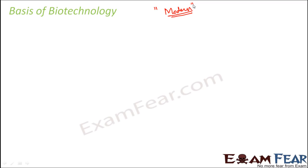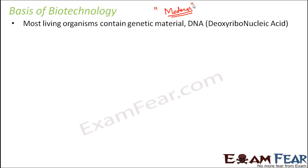Now the question is: what is the basis of this mix and match? How can we even think of mixing and matching genes between organisms? A lion looks so different from a mouse, a mouse from a bird, and a bird from a human being. So how can we even think of exchanging genes between them? That's because all living organisms contain a genetic material, and most organisms have DNA as the genetic material. Only a few exceptions like viruses have RNA; otherwise most living organisms have DNA — deoxyribonucleic acid — as their genetic material.